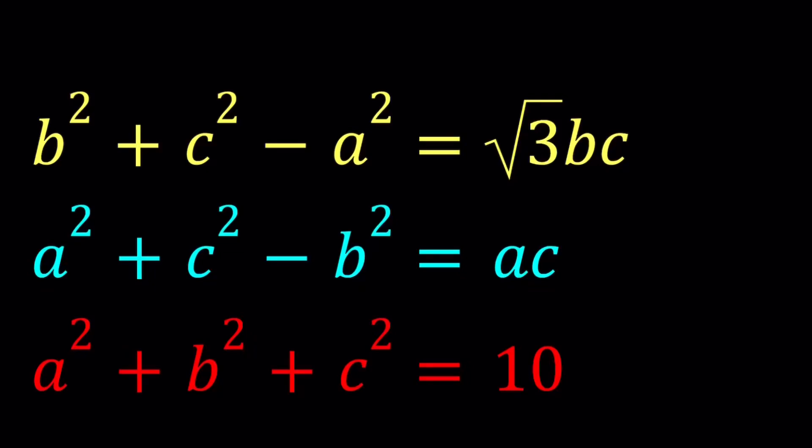Hello everyone. In this video, we're going to be solving a homemade system of equations. We have b² + c² - a² = √3bc, a² + c² - b² = ac, and a² + b² + c² = 10. We're going to be solving for a, b, and c. Since there are three variables and three equations, we should be able to solve it. This looks like a quadratic system, doesn't it?